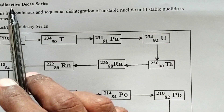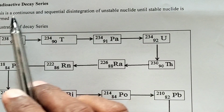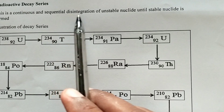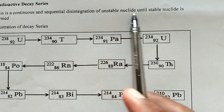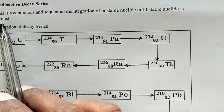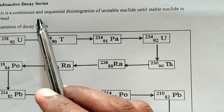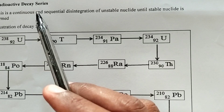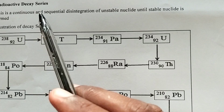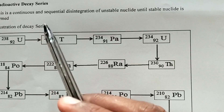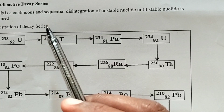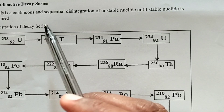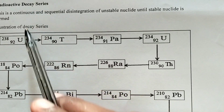Now to start with, we have radioactive decay series. This is a continuous and sequential disintegration of an unstable nuclide until a stable nuclide is formed. A disintegration where an unstable nuclide is involved, and this disintegration is continuous and sequential until a stable nuclide is formed, is what we call a radioactive decay series.